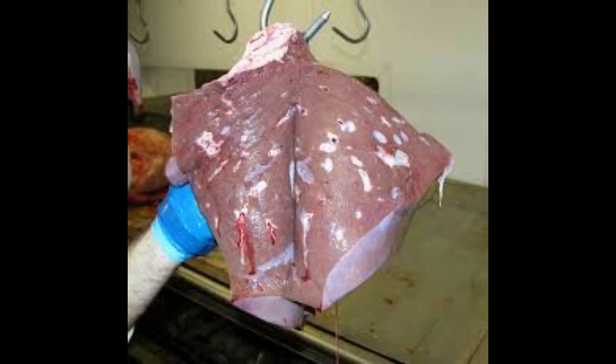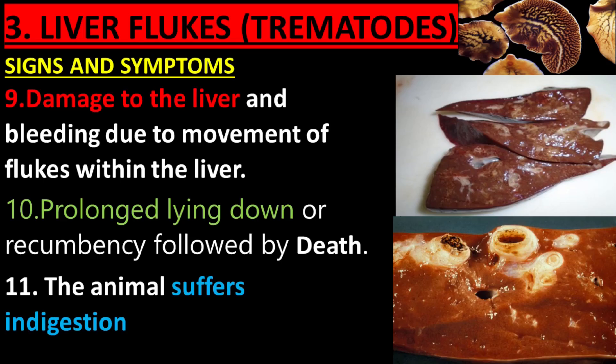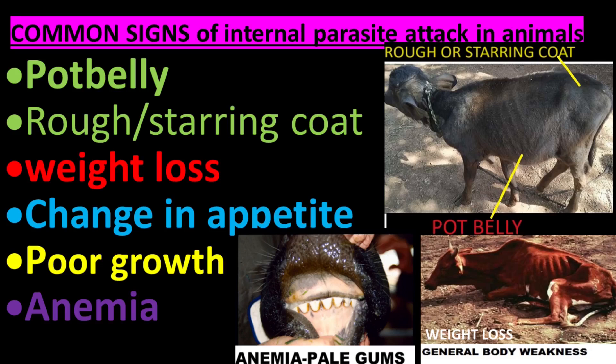Damage to the liver and bleeding due to movement of flukes within the liver. Prolonged lying down or recumbency, followed by death. The animal suffers indigestion — signs include bloating or distended abdomen, decreased appetite or refusal to eat, abnormal feces (diarrhea or constipation), excessive salivation or drooling, restlessness or discomfort, frequent lying down and getting up, grinding teeth or vocalizing discomfort, and decreased milk production in dairy animals.